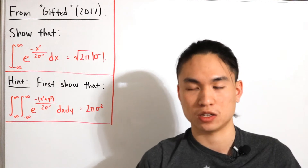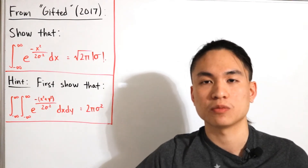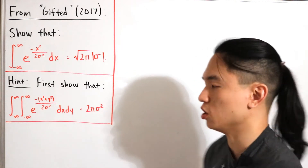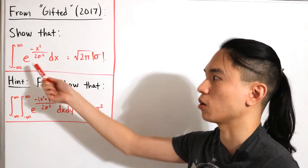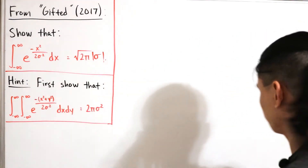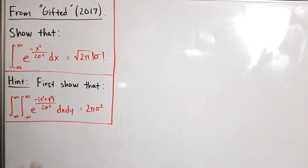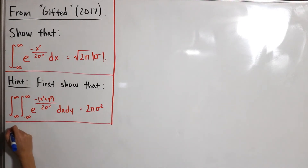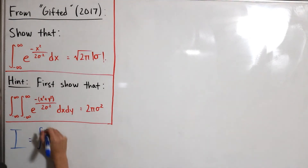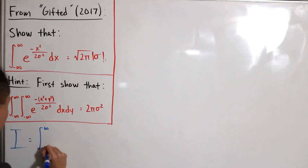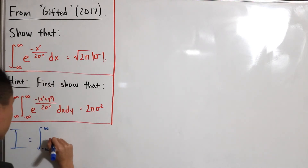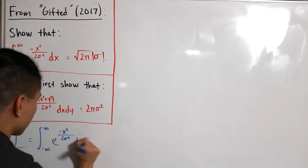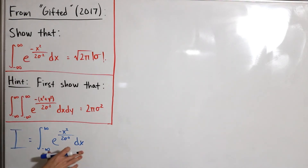The method used here involves showing that a double integral equals a given expression, then converting to polar coordinates. The process is the same as in the Gaussian integral video, just with different numbers involving two sigma-squared. We set the given integral as capital I, so I equals the integral from negative infinity to infinity of e to the negative x-squared divided by two sigma-squared dx.